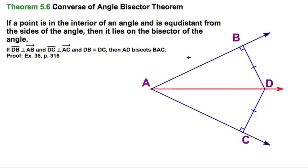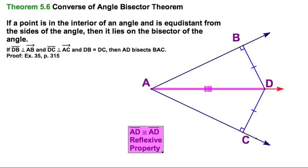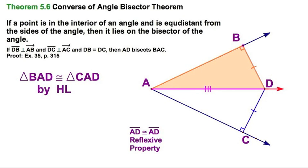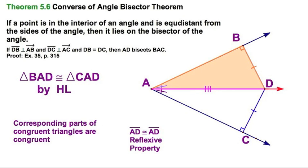That ray would be the angle bisector. By the reflexive property, AD is congruent to itself. Hypotenuse-leg makes those two triangles congruent. Then by corresponding parts, their corresponding parts are congruent. Therefore, if those two angles are congruent, by definition a ray that divides an angle into two congruent angles is an angle bisector.